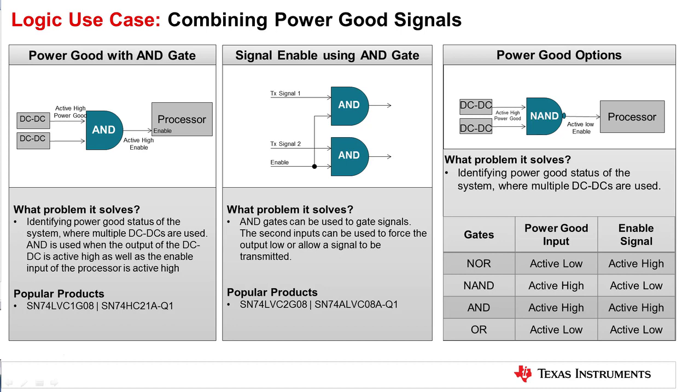A similar concept can be applied for selective gating or enabling using AND gate. Popular devices include LVC1G08, AUP1G00 which is the NAND gate, AHC1G32 which is the OR gate.